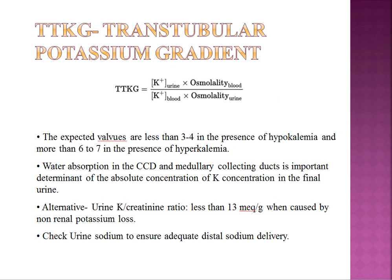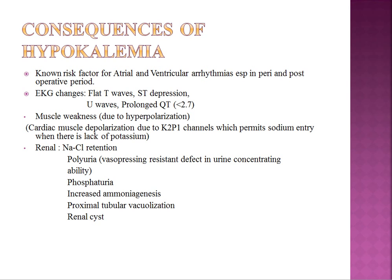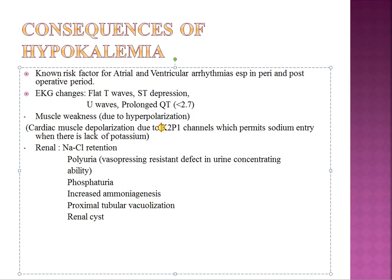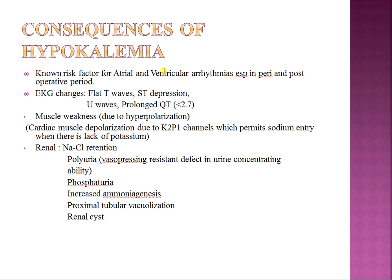Consequences of hypokalemia — when serum potassium falls below 3.5 mEq/L: it is a known risk factor for atrial and ventricular arrhythmias, especially in the peri- and post-operative period. Typical EKG findings include flattening of T waves, ST depressions, U waves, and prolongation of the QT interval. It leads to muscle weakness due to hyperpolarization. Cardiac muscle depolarization involves K2P1 channels, which permit sodium entry when potassium is lacking, explaining the various arrhythmias seen in hypokalemia.